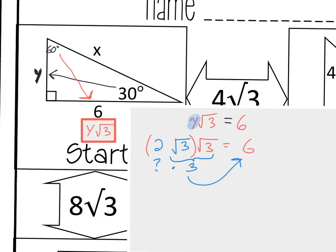Well, 2 times 3 would get me to 6. So now I know that 2 root 3 times root 3 would be 6, and therefore my Y value is 2 root 3.